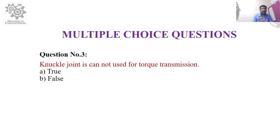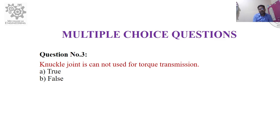Question number three: A knuckle joint cannot be used for torque transmission — true or false?